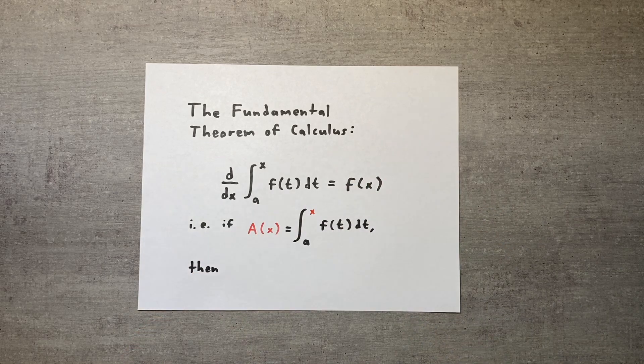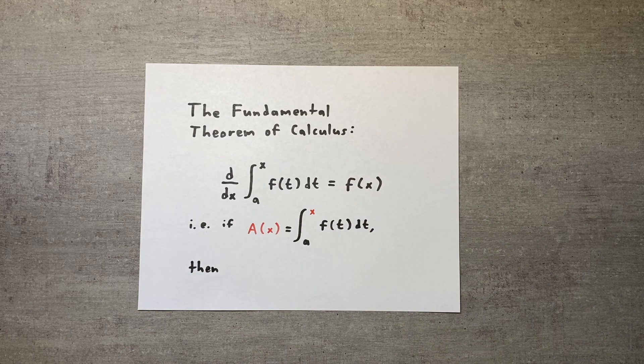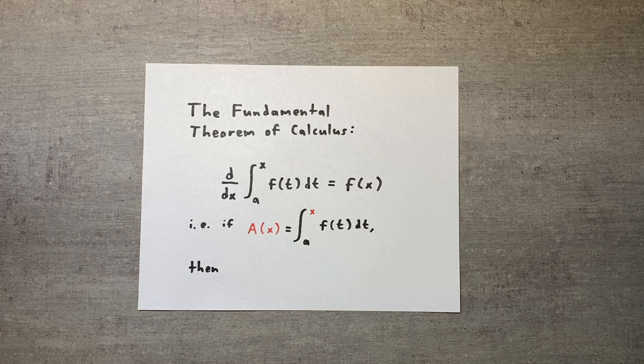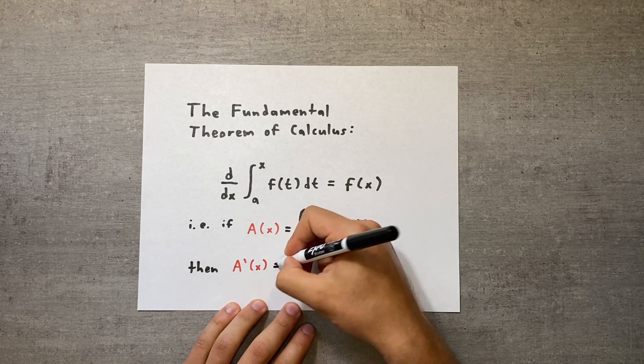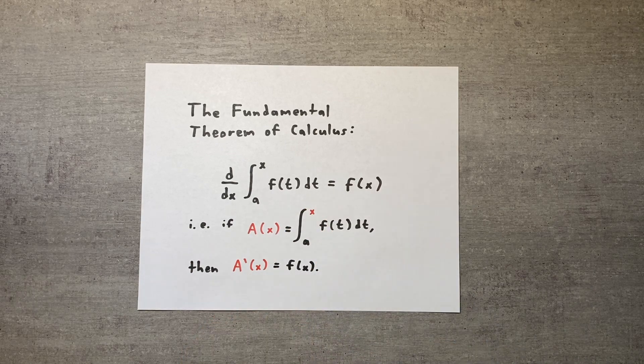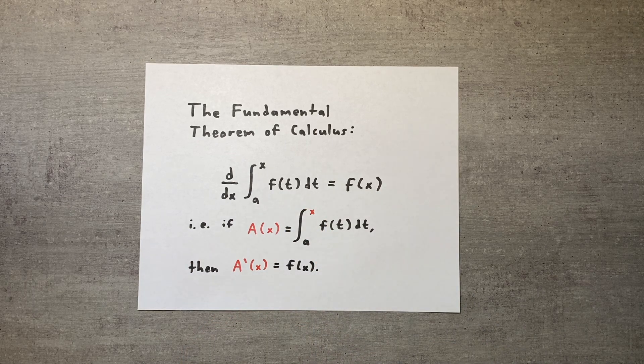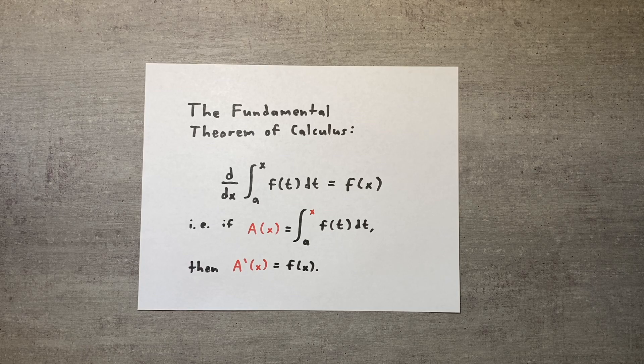Using this definition, the fundamental theorem looks much simpler, and its meaning is clearer. It states that the rate of change of the area function at a given point is equal to the value of the curve f at that point. Let's see if we can understand what this means and why it's true.